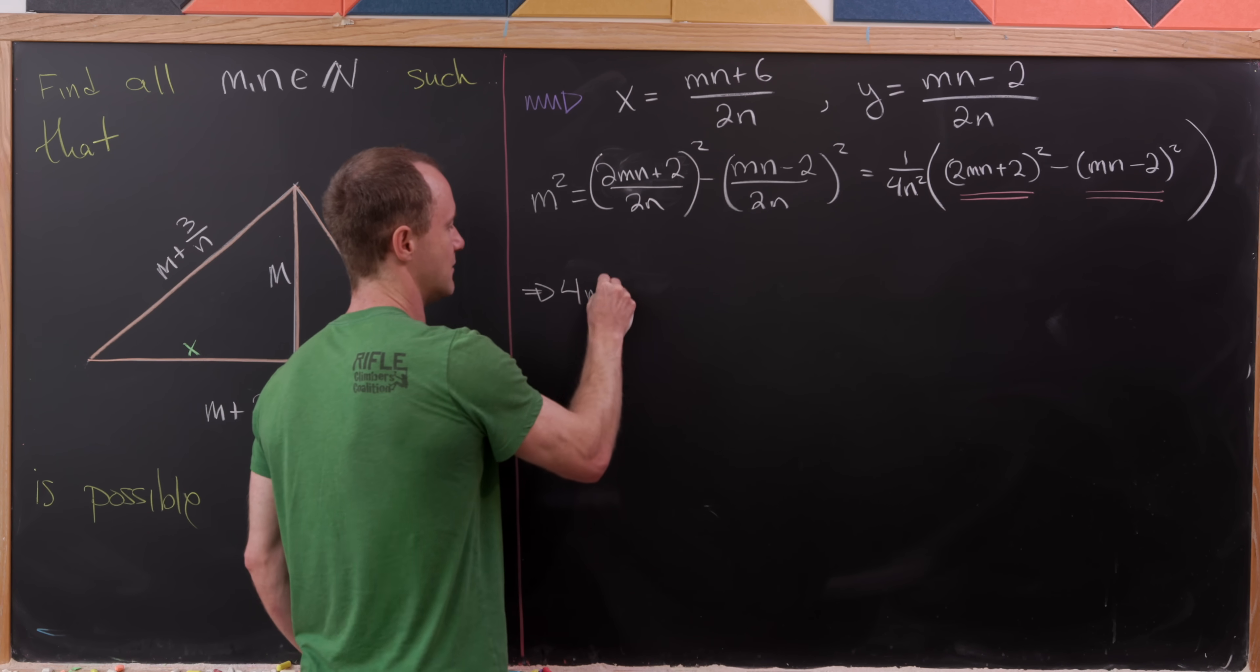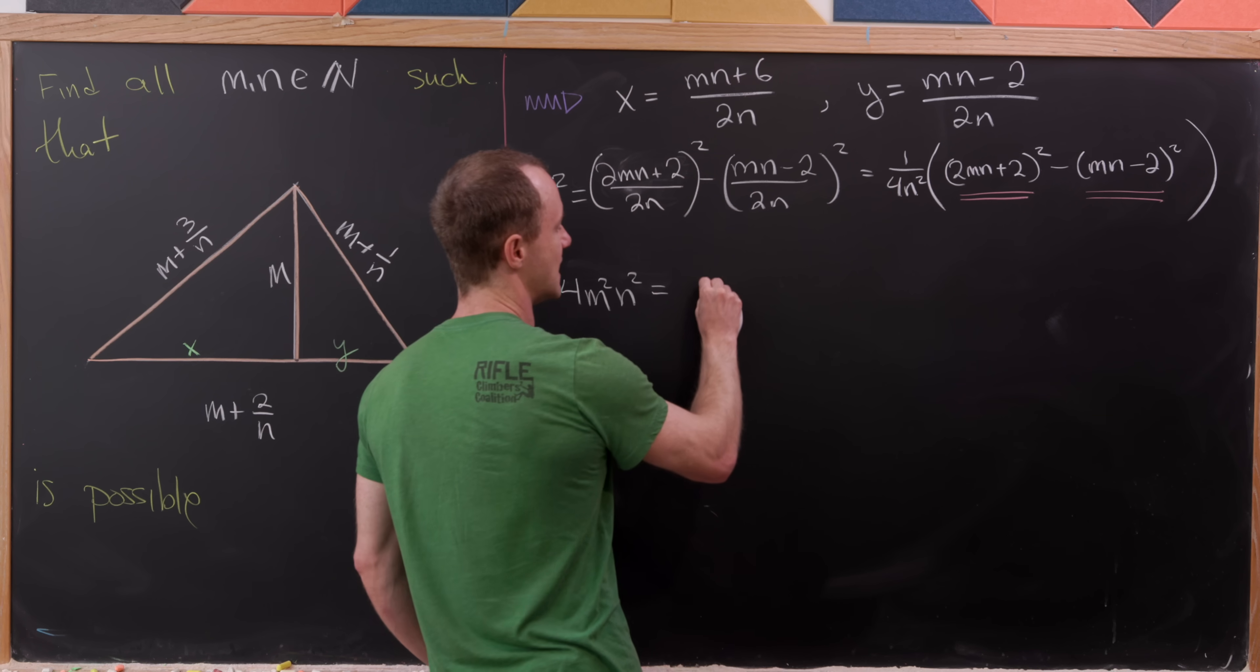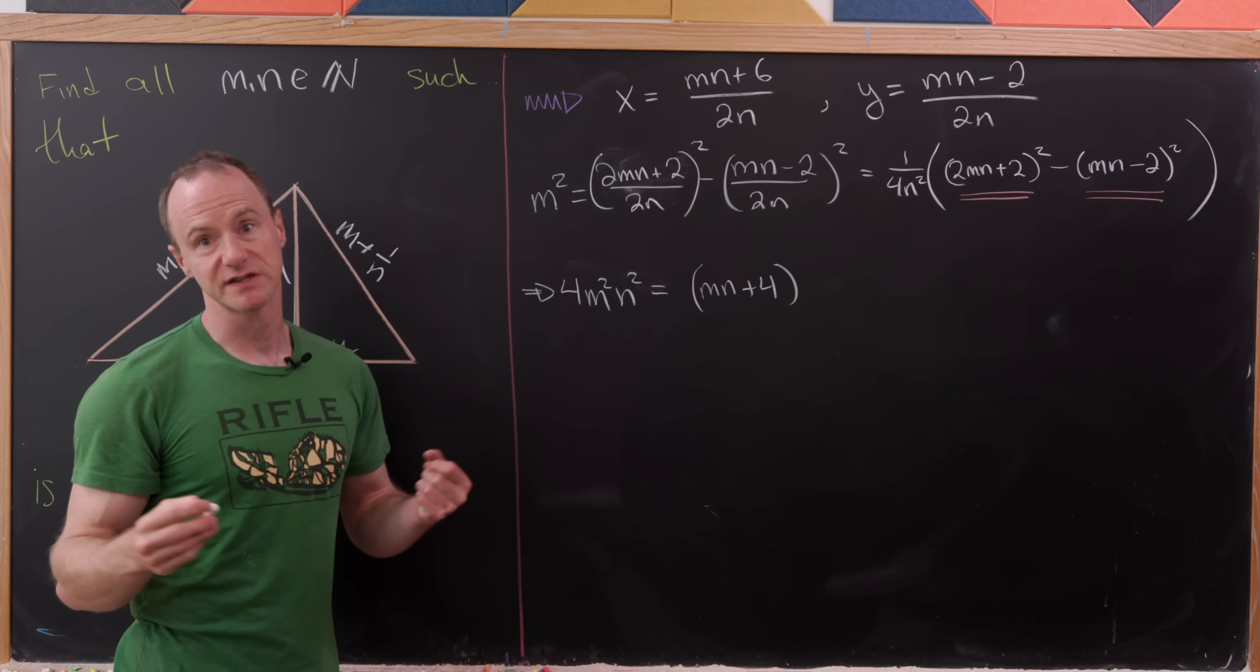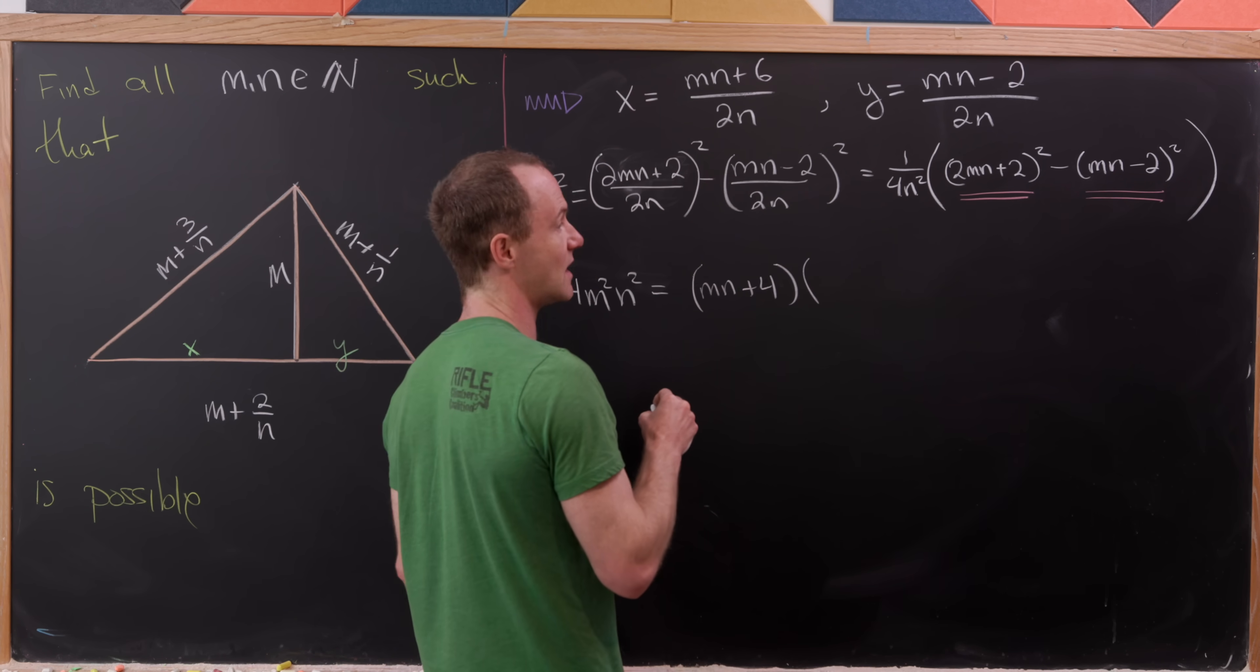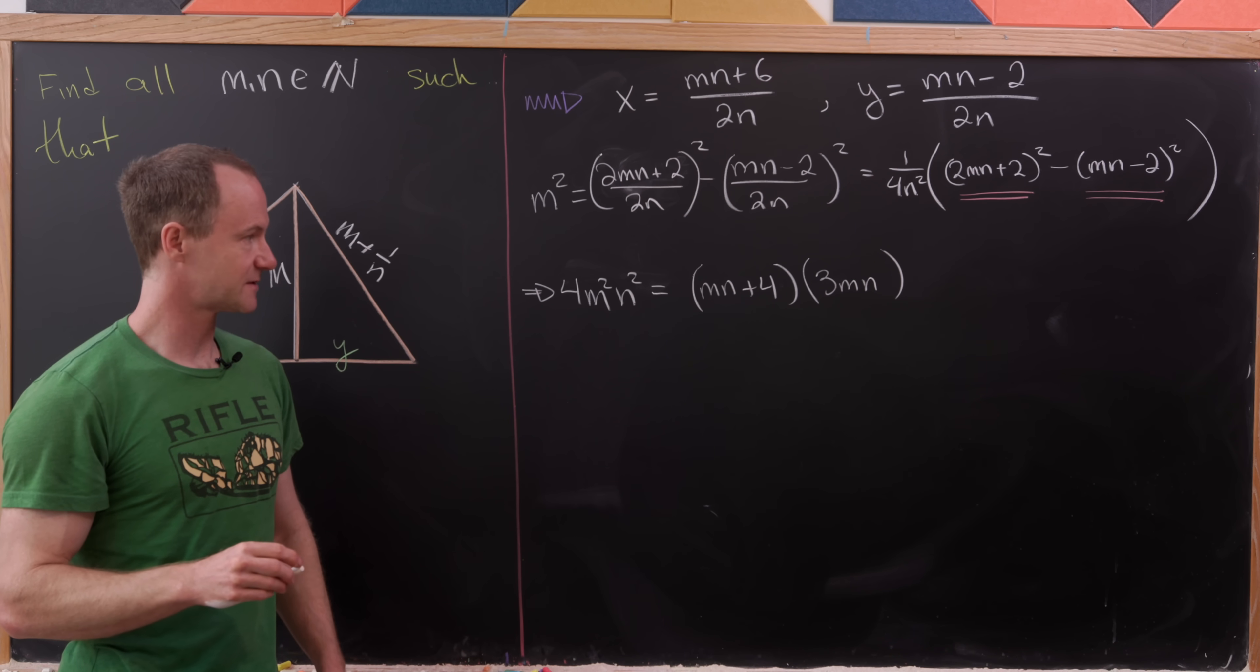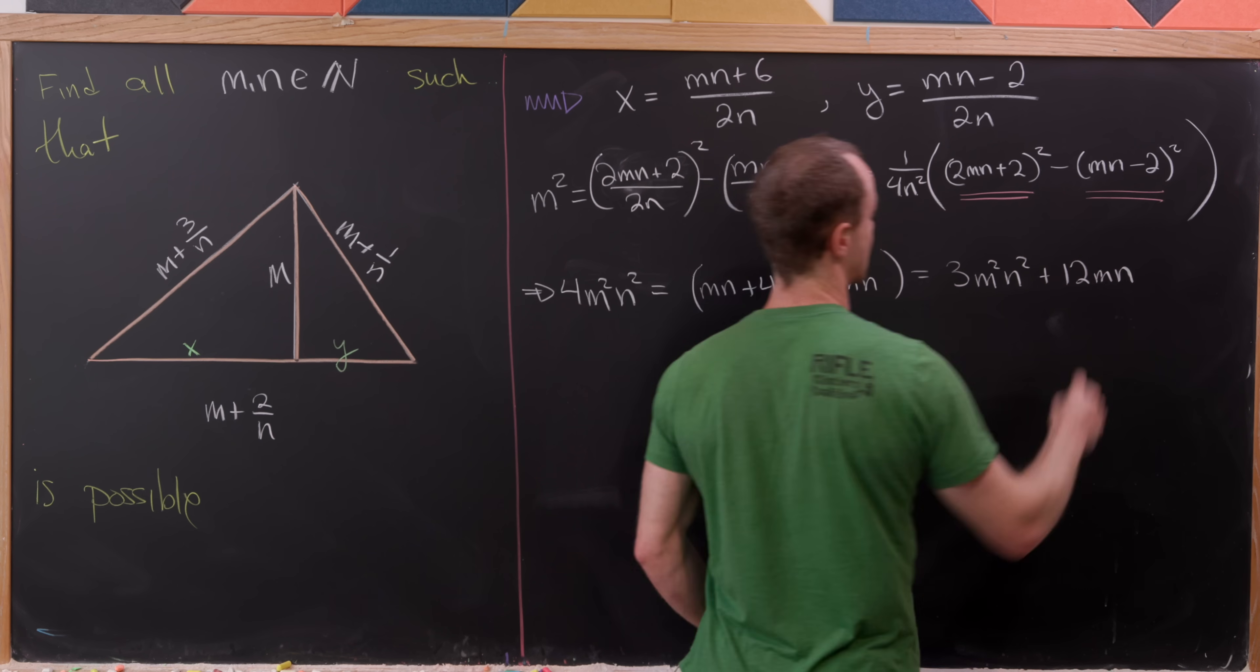And so that gives us 4 m squared n squared is equal to, so now we'll have the difference of those two, which is going to be m n plus 4. So we get that because it's 2 m n plus 2 minus m n minus 2, but of course the plus 2 and the minus 2 will double up to 4. So that's the difference of those two times the sum of those two, but the sum of those two will be 3 times m times n. So we're left with something like this. But now I can multiply out that right-hand side and I'll be left with 3 m squared n squared plus 12 times m times n.